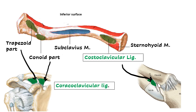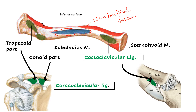On the inferior surface, two muscles and two ligaments are attached. The sternohyoid muscle is attached to the posterior surface near the medial end, running from the sternum and clavicle up to the hyoid bone. The subclavius muscle is attached to the groove on the inferior surface of the shaft. The clavipectoral fascia is attached along the margins of the subclavian groove, enclosing both the subclavius muscle and the pectoralis minor.